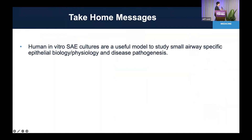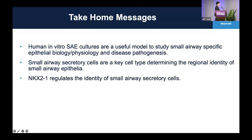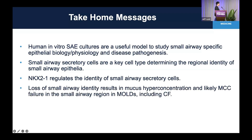In summary: human in vitro small airway cell cultures are a useful model to study small airway-specific epithelial biology, physiology, and disease pathogenesis. Secretory cells are the key cell type that determines the regional identity of small airway epithelia. NKX2.1 specifically regulates the identity of small airway secretory cells — meaning small airway identity itself — and loss of small airway identity results in mucus hyper-concentration and likely mucociliary clearance failure in the small airway region in muco-obstructive diseases including CF.